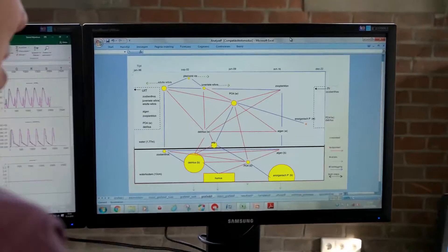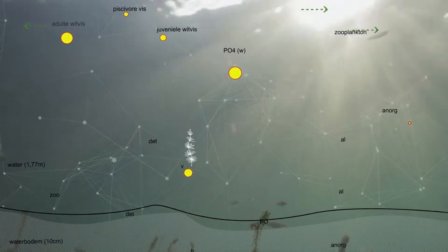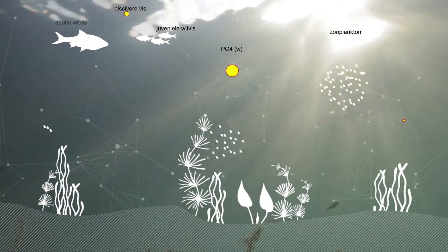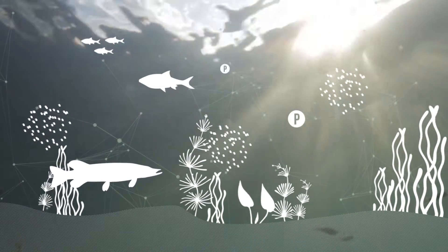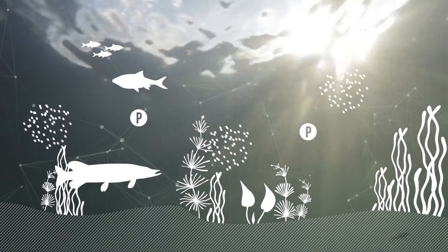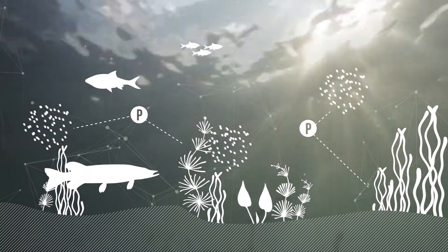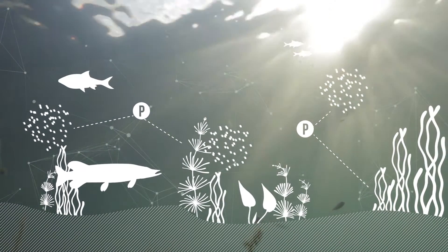Imagine a water body: a clear world full of water fleas, fish and plants. Light shines to the bottom and the nutrients in the water, such as phosphate, are consumed by plants and water fleas.